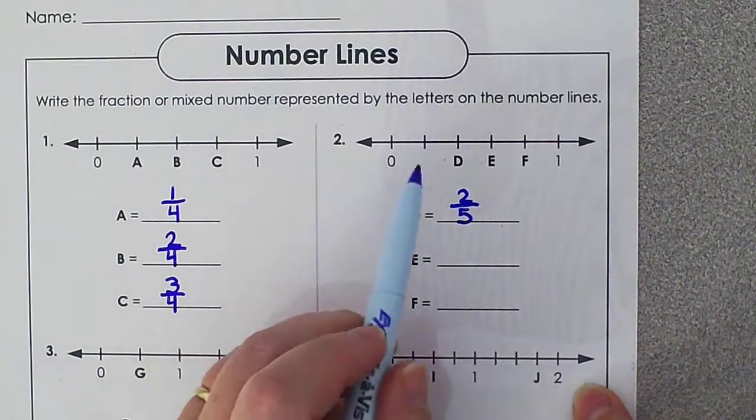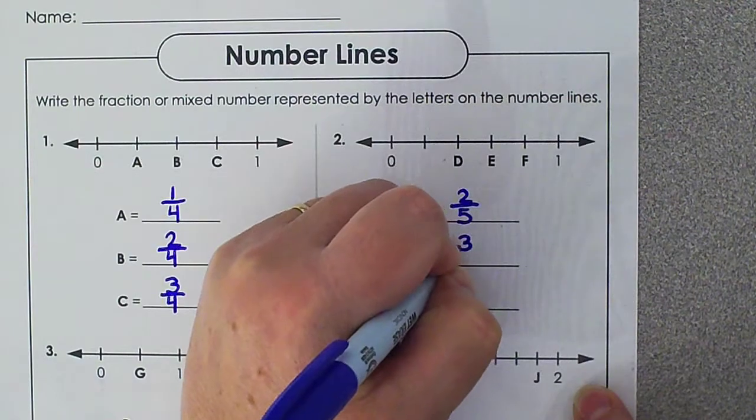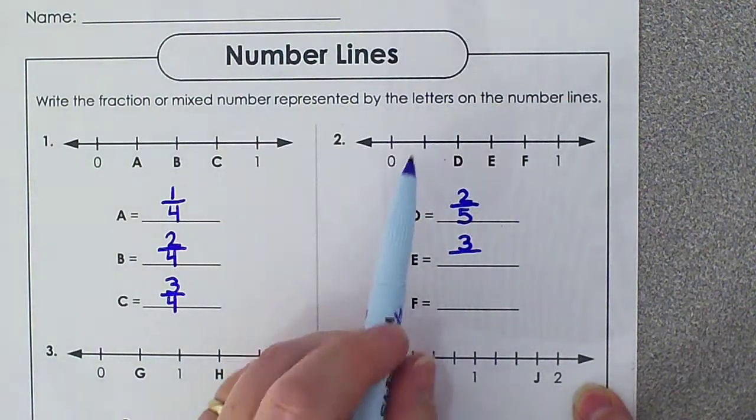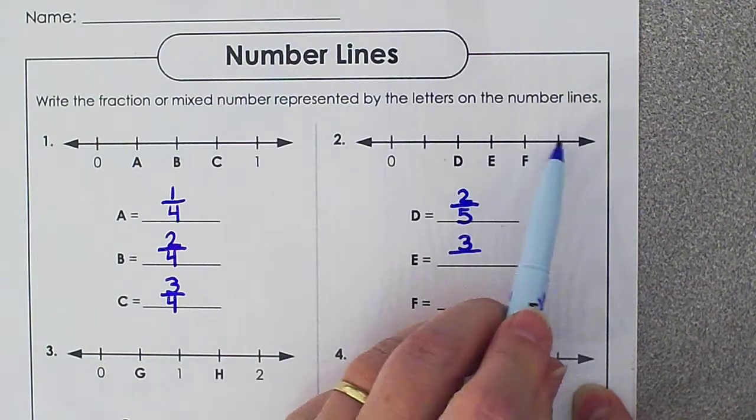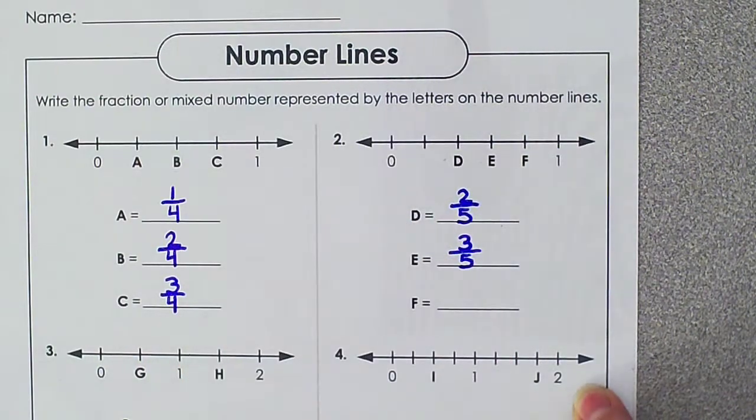Point E is located 1, 2, 3 marks past our 0. And there are 1, 2, 3, 4, 5 marks in all. So E is located at 3 fifths.